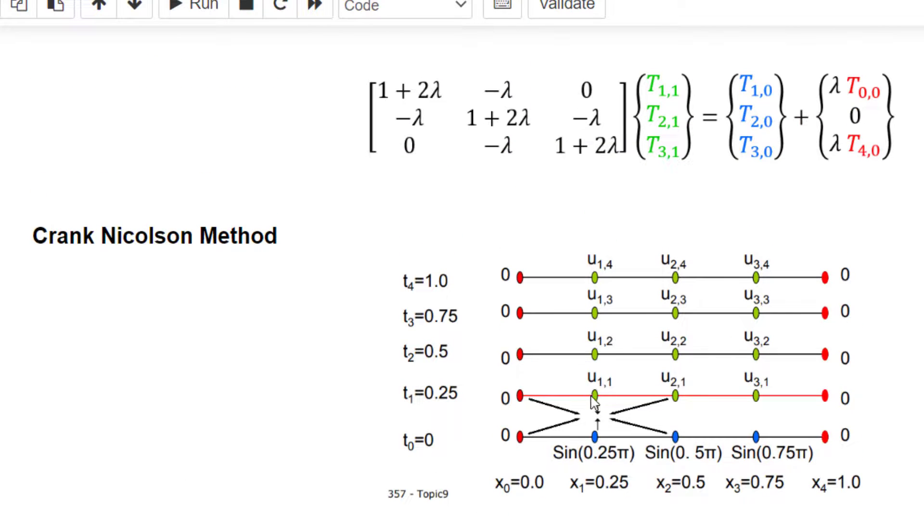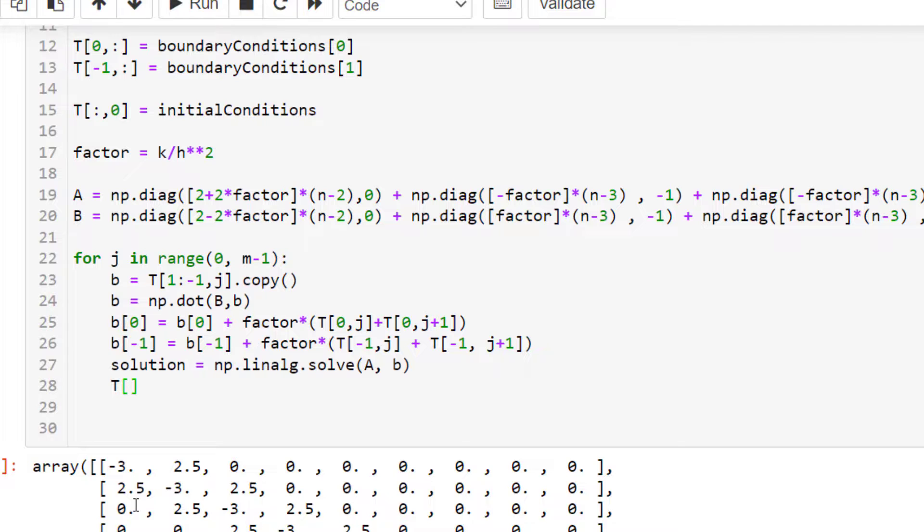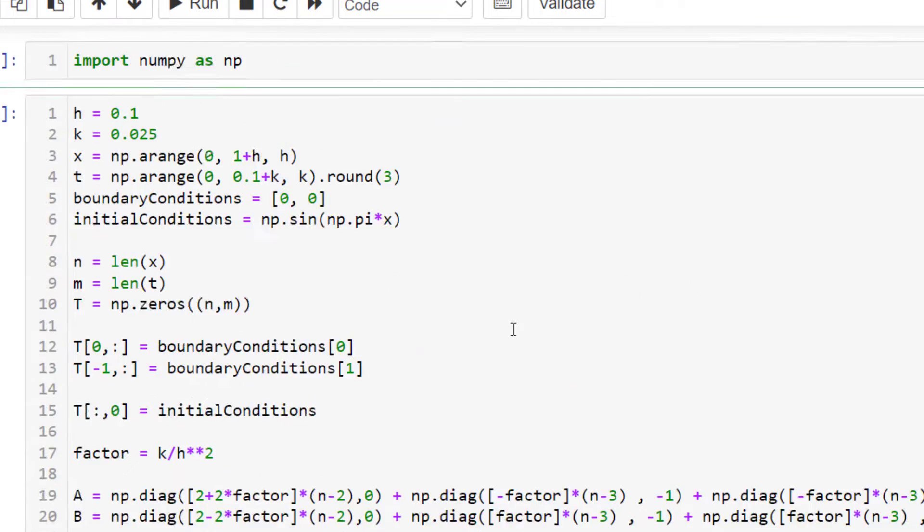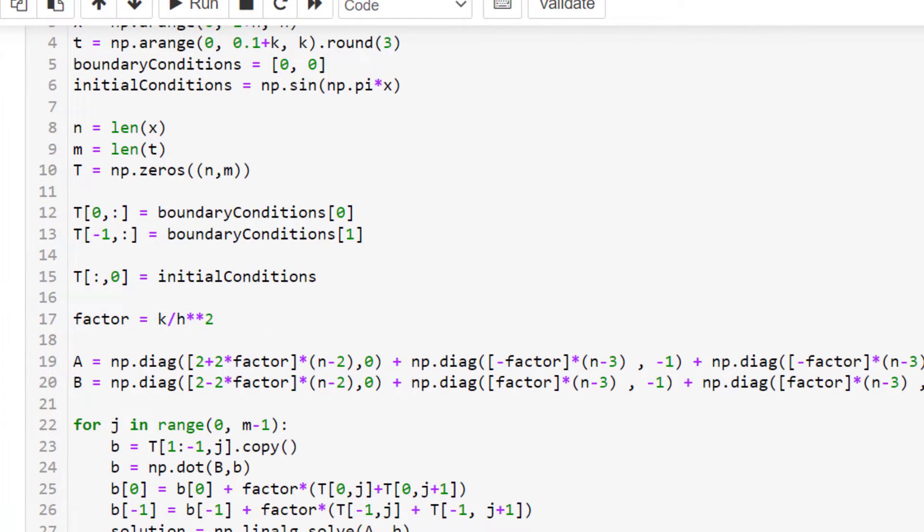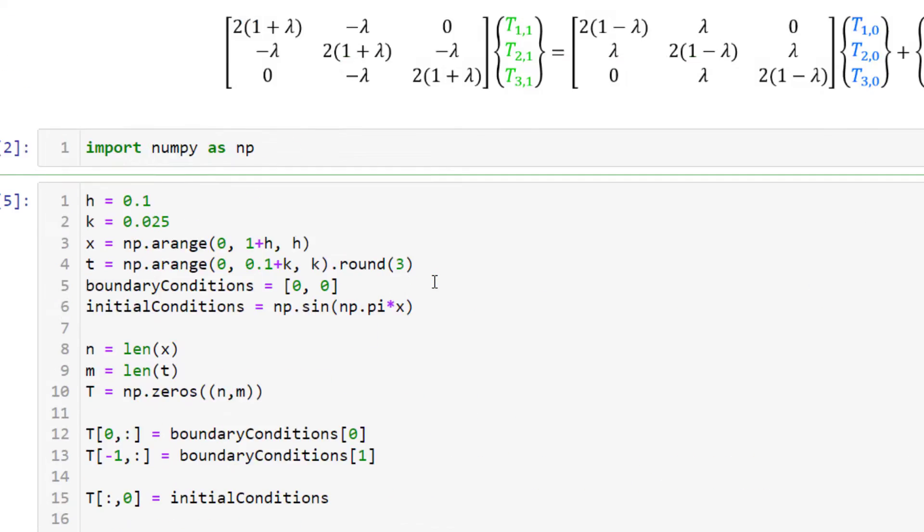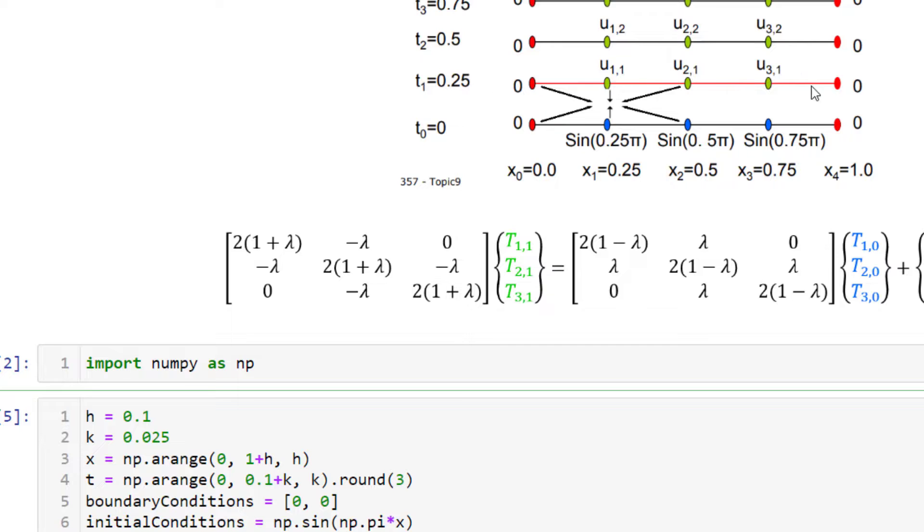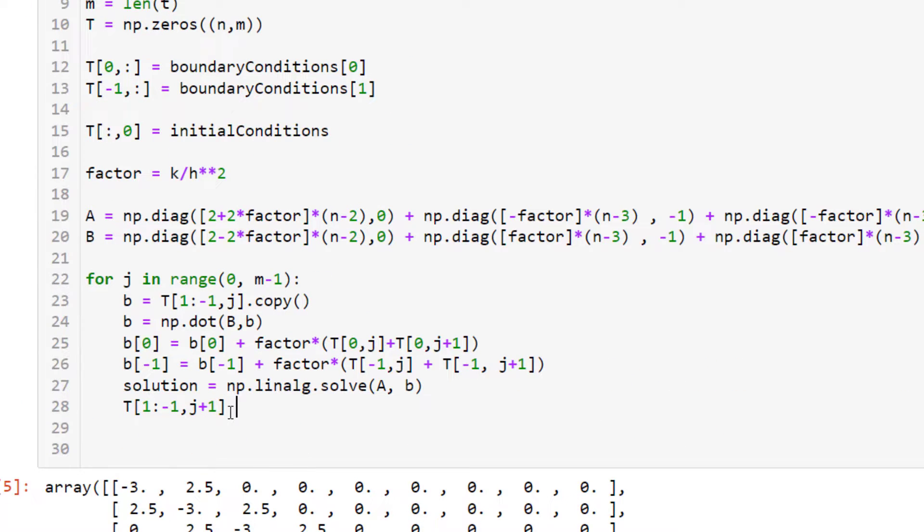Once you find the solution you need to make sure you update your T matrix otherwise this for loop cannot proceed. As you solve the values you need to plug it back in here so that you can go to the next layer and repeat the same process. So to update your T values we are updating the green dots here so what's the index of these green dots here. The position is not starting here because the boundary is already known so we'll skip this boundary and the last boundary so it's going to be from 1 till minus 1. And the time index is going to be J plus 1 we are in this layer, this one and we'll update it using the solution that we just found.